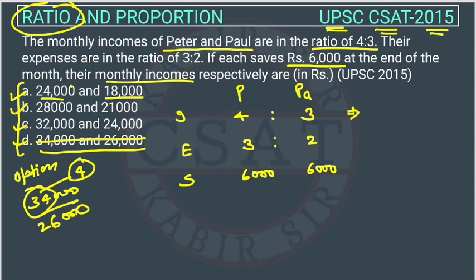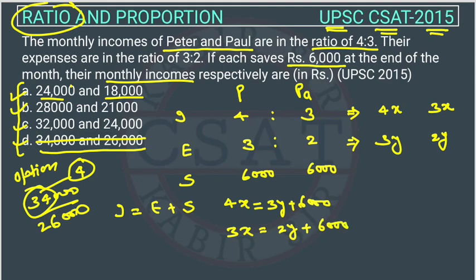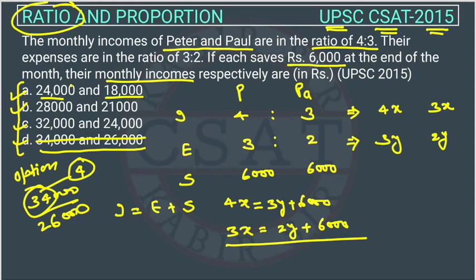Let's assume one variable: Peter's income is 4x and Paul's is 3x. For expenses, take another variable: Peter's expense is 3y and Paul's is 2y. Since income equals expense plus saving: for Peter, 4x = 3y + 6000, and for Paul, 3x = 2y + 6000.